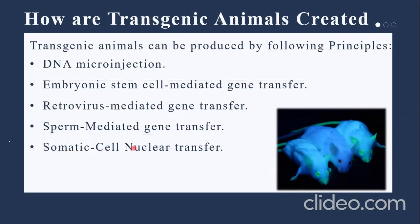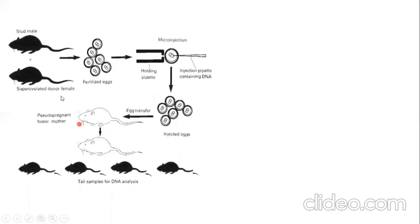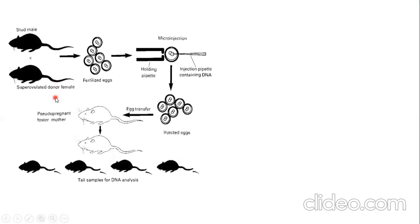The fifth one is somatic cell nuclear transfer. Now I am going to explain this with the help of a diagram. The first diagram is related to DNA microinjection. As you can see here, it shows a stud male and a super ovulated donor female. We have fertilized eggs, which are introduced with the help of an injection pipette. These injected eggs are then transferred into the pseudo pregnant foster mother, and we get the genetically modified mice.